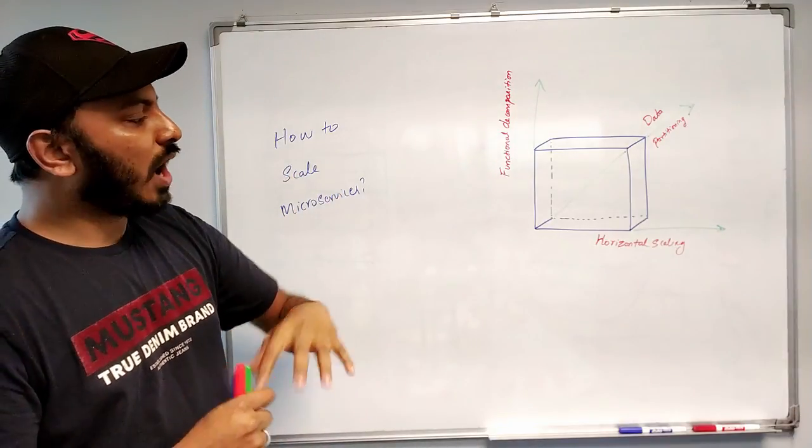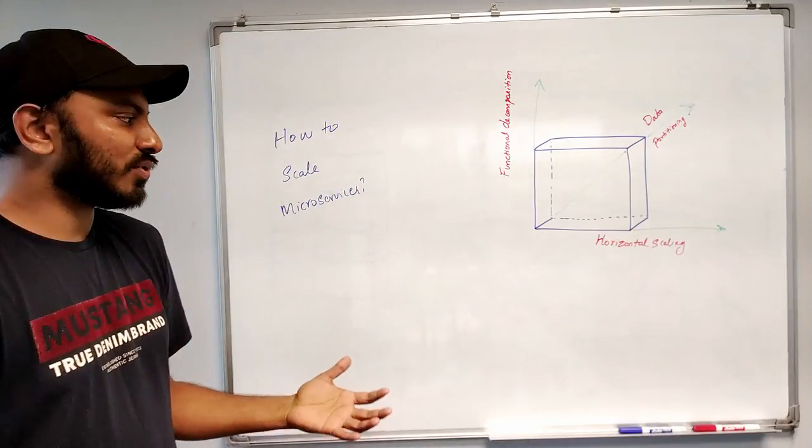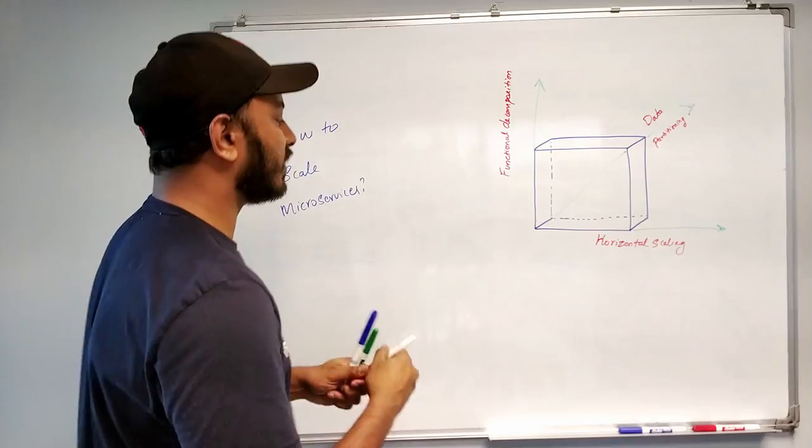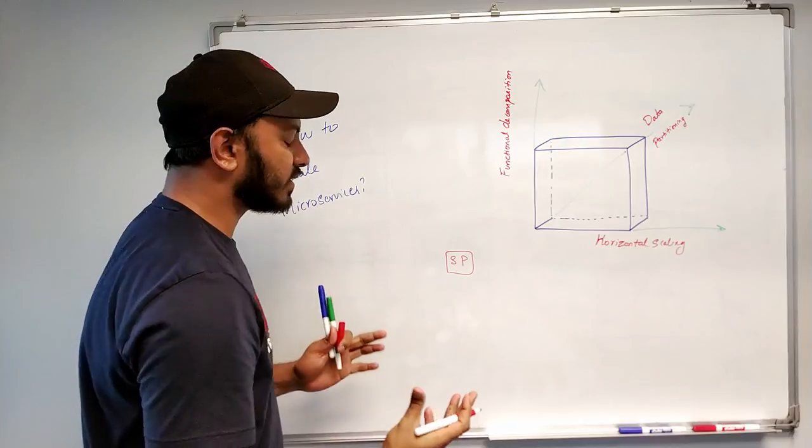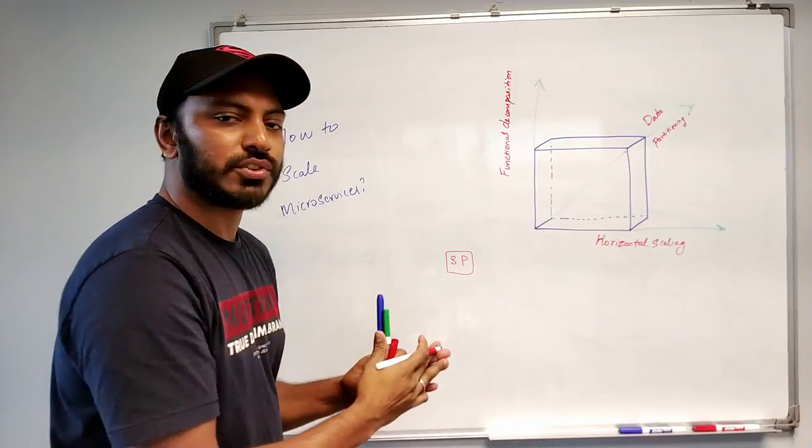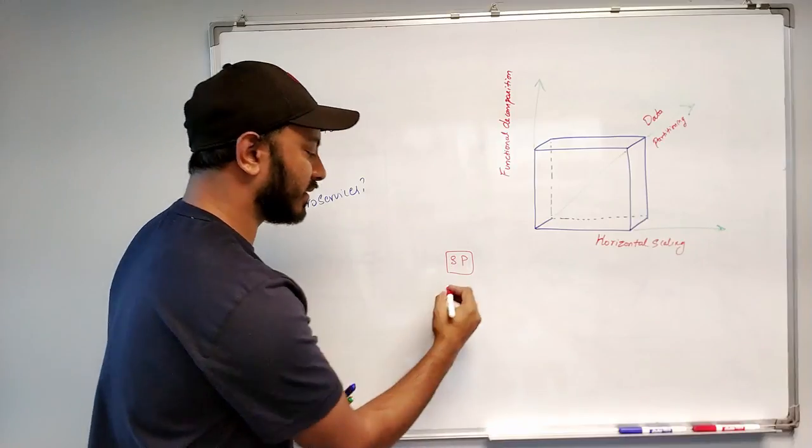Now how can we scale our microservices using horizontal scaling? Definitely it's so simple. So you have a microservice that is search and product microservice. Now if you want to scale this one, all you have to do is run a duplicate copy of the same service.